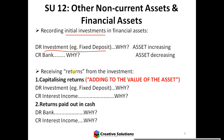The return on the fixed deposit could be added to the value of the fixed deposit or paid out to you as the investor. Capitalizing the return means adding it to the value of the asset — so the fixed deposit grows in value. To increase the value, you debit it because it's an asset. You debit the investment to increase it, or credit the investment to decrease it.